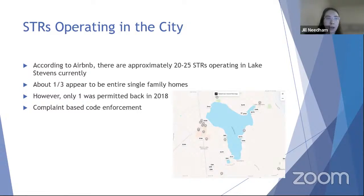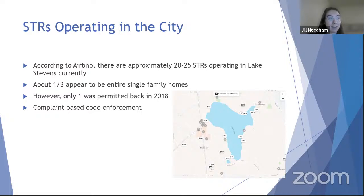This slide shows a map — a screen capture from Airbnb — not showing quite all of them but a good number. According to Airbnb, there are about 20 to 25 operating in Lake Stevens. About one third appear to be single-family homes, and most are on or near the lake. Only one has been permitted, back in 2018, and we haven't received any other applications since then.